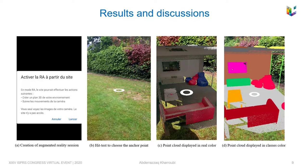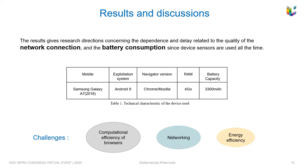And in D, the point cloud displayed in class colors. Promising results highlight a frame rate varying between 27 and 60 FPS for a real-time point budget of 4.3 million points.